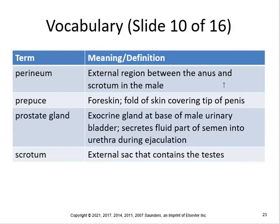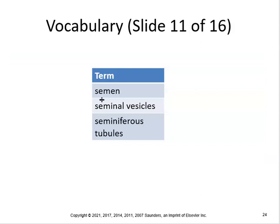Females also have a perineum, located between the anus and the vagina. The prepuce is the foreskin — the fold of skin covering the tip of the penis. The prostate gland is the exocrine gland at the base of the male urinary bladder that secretes fluid into the semen during ejaculation. The scrotum is the external sac that contains the testes, positioned to keep temperature cooler so sperm don't die off.